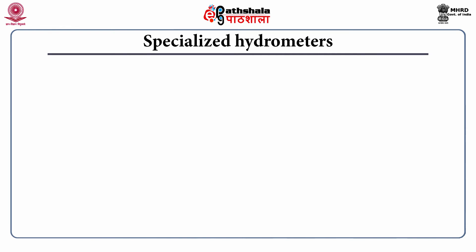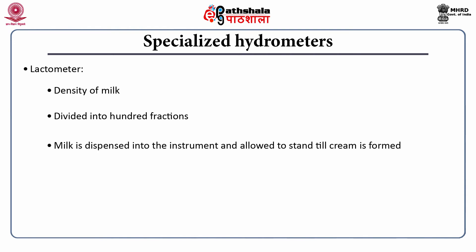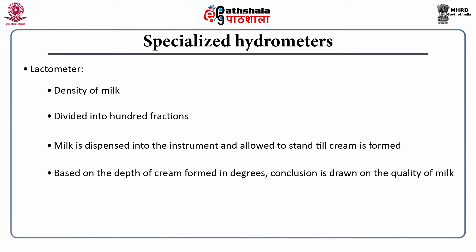There are also specialized hydrometers used for specific purposes. To find out the density of milk, a lactometer is used, wherein the sample is divided into 100 fractions. Milk is dispensed into the instrument and allowed to stand until cream is formed. Based on the depth of the cream formed in degrees, a conclusion is drawn on the quality of milk. If the lactometer floats on milk, it is pure; if it dips down, then it is adulterated.